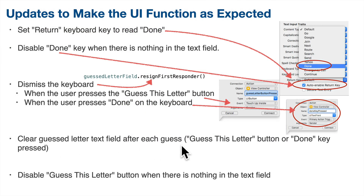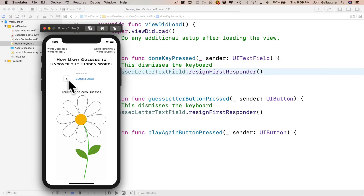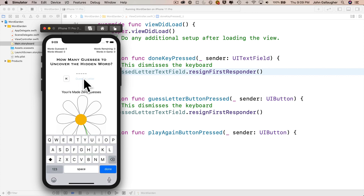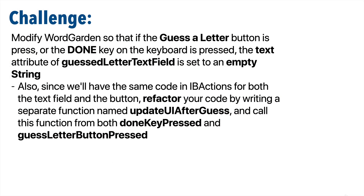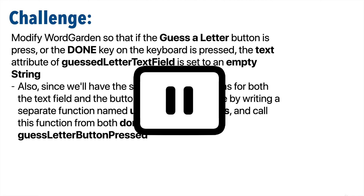Now we also want to clear the guest letter text field after each guess. After pressing the guess a letter button or the done key, the letter still shouldn't be hanging out in the text field. We want to make sure that once you guess a letter or press done, we put an empty string in as the text attribute for the guestLetterTextField. Here's your challenge: modify WordGarden so that if the guess a letter button or the done key is pressed, the text attribute of guestLetterTextField is set to an empty string. Also, since we'll then have the same code in both IB actions, refactor by writing a separate function named updateUIAfterGuess and call it from both doneKeyPressed and guessLetterButtonPressed.